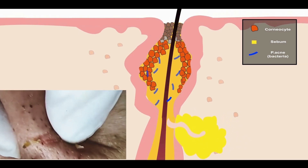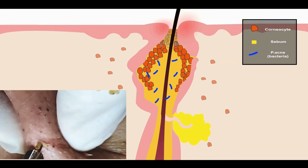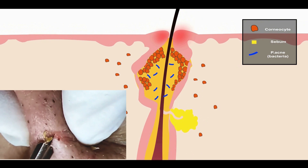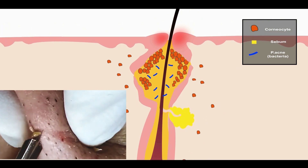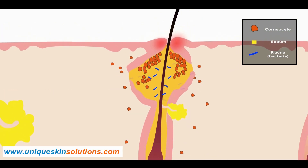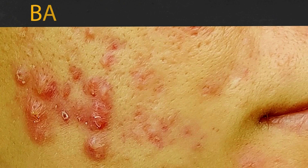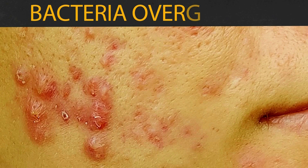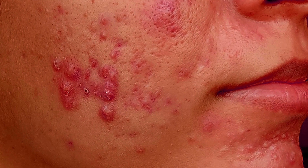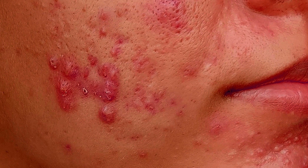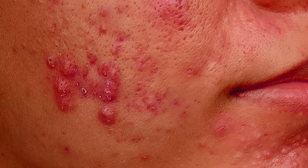Bacteria normally exist on our skin and can flourish in clogged pores when sebum is abundant, leading to further accumulation. This appears as red colored bumps and blemishes on the skin. It presents as papular and pustular acne. Papules are red-colored small bumps, while pustules are lesions with a visible accumulation of pus in the skin.